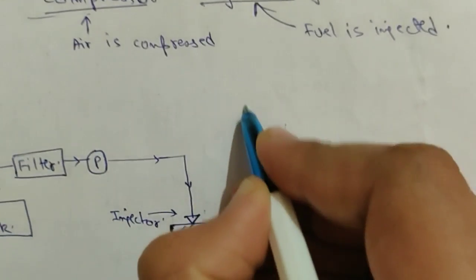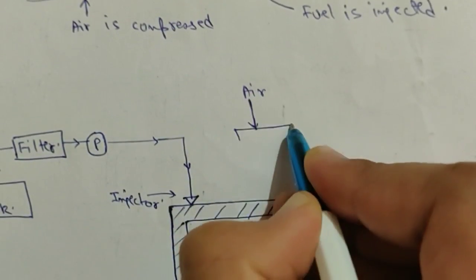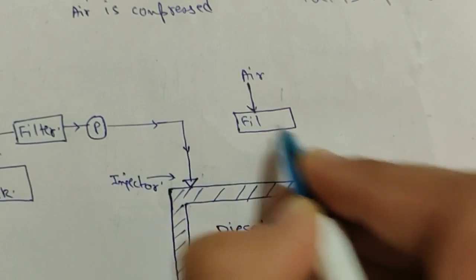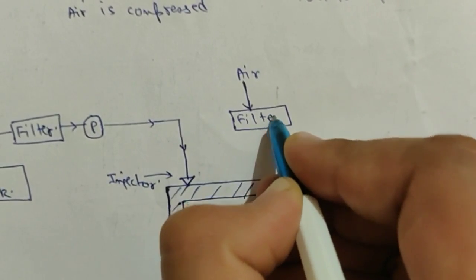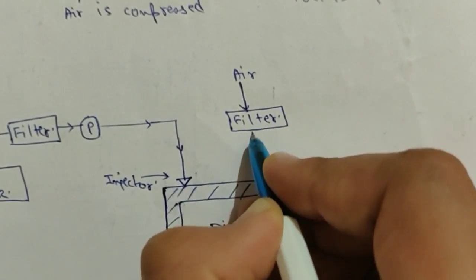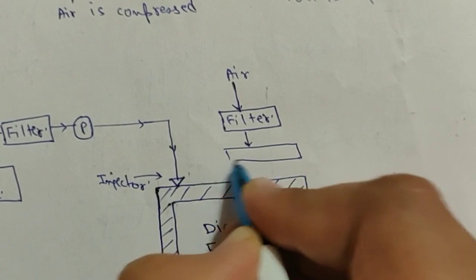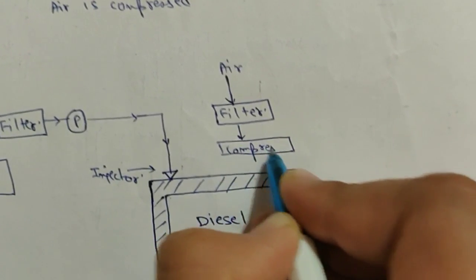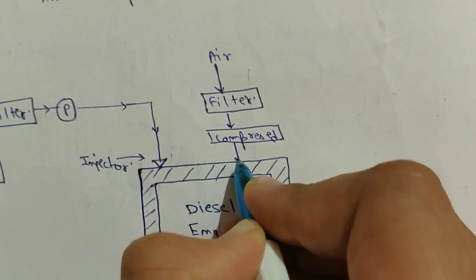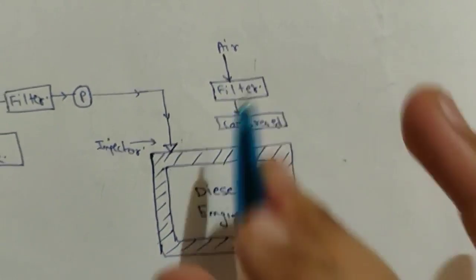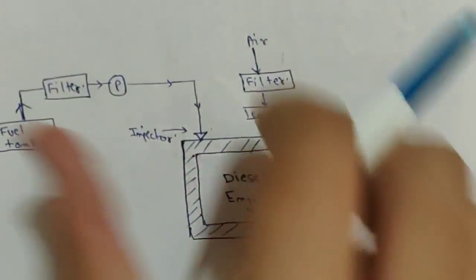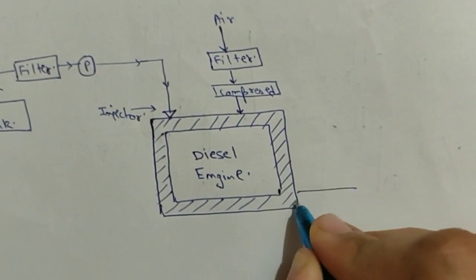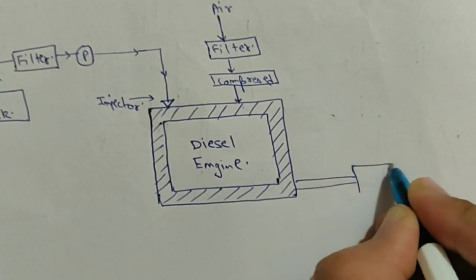Air from the atmosphere is taken in, filtered to avoid any dust particles from entering the diesel engine, and then it is compressed and put into the diesel engine, which then starts running.